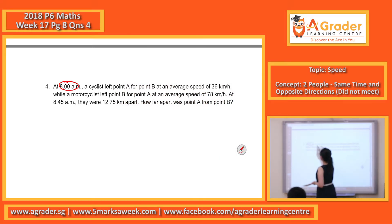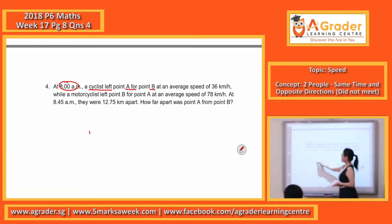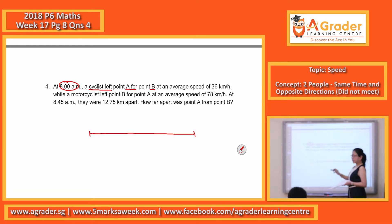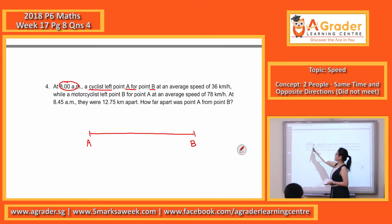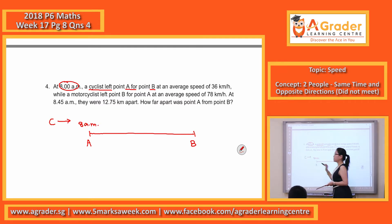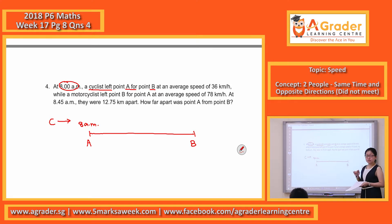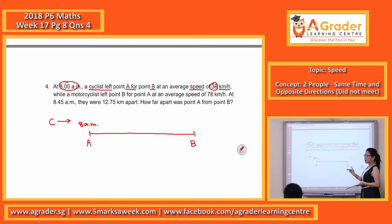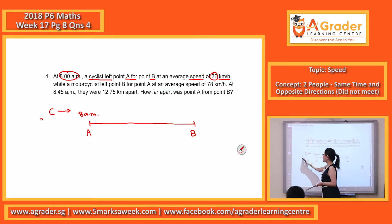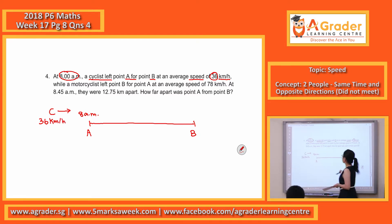At 8am, a cyclist left point A for point B. We start off by drawing the distance timeline — Point A, Point B — and they say that it's 8am, so the cyclist travels in that direction at an average speed of 36km per hour.